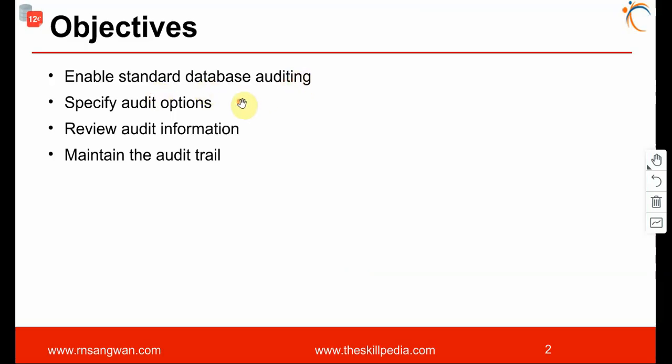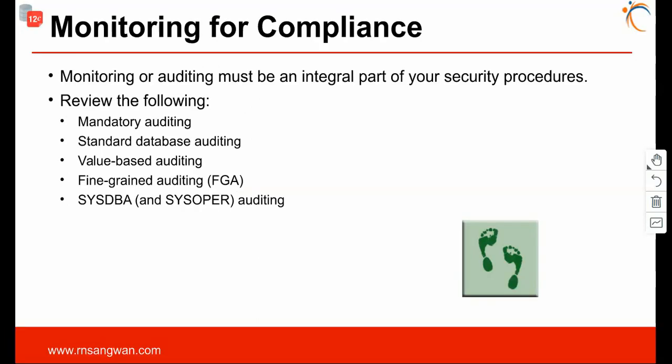This is session 10: enabling database auditing, audit options, reviewing audit information, and maintaining the audit trail. Auditing is about verification — logging in, logging out, and monitoring what has been done. You want to know who logged into your database at a certain time or who modified a table. Cross-checking and going back to see who did what is what auditing means.